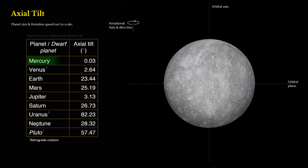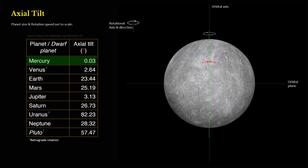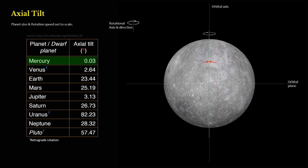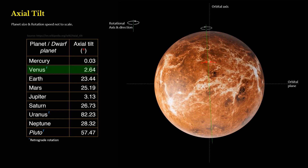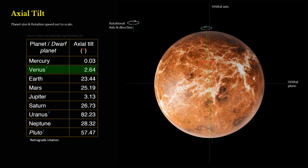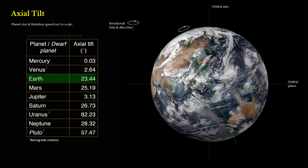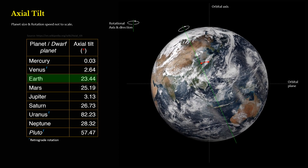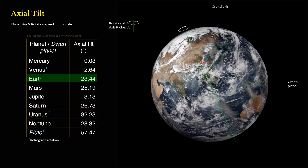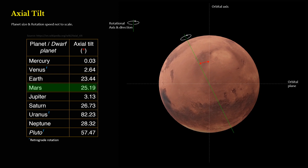Mercury: 0.03 degrees. Venus: 2.64 degrees. Earth: 23.44 degrees. Mars: 25.19 degrees.